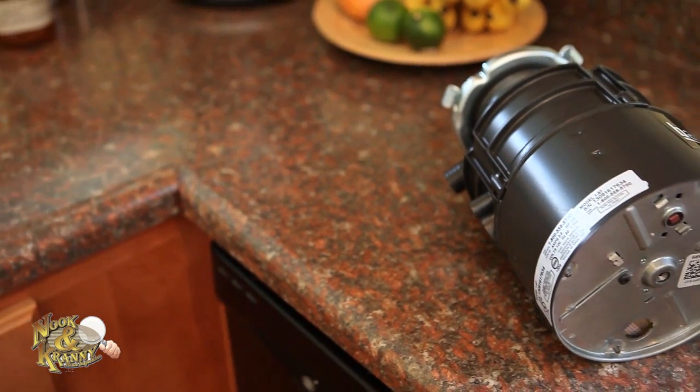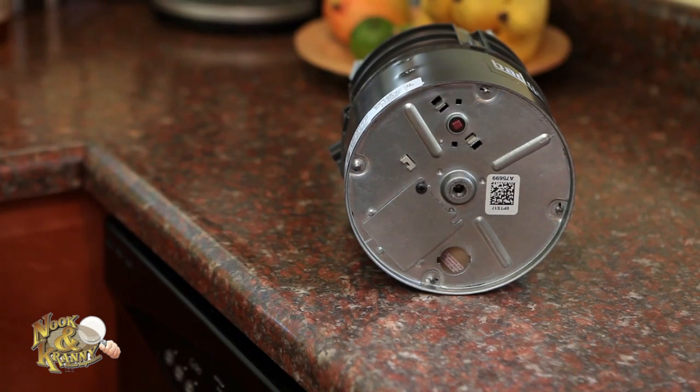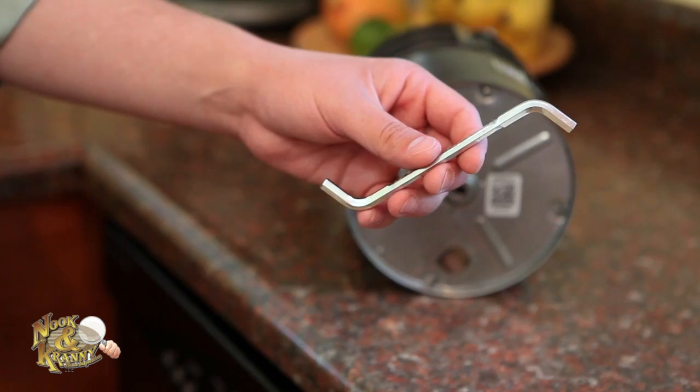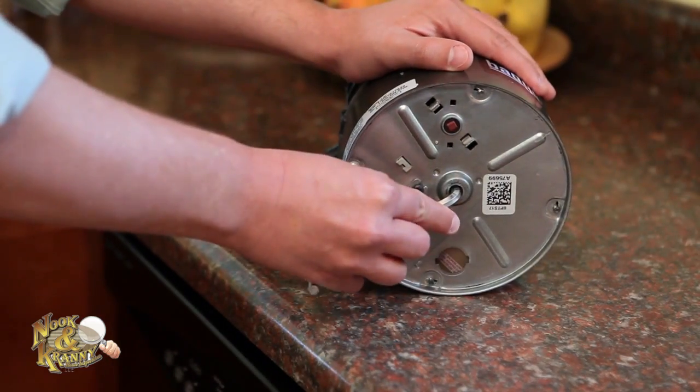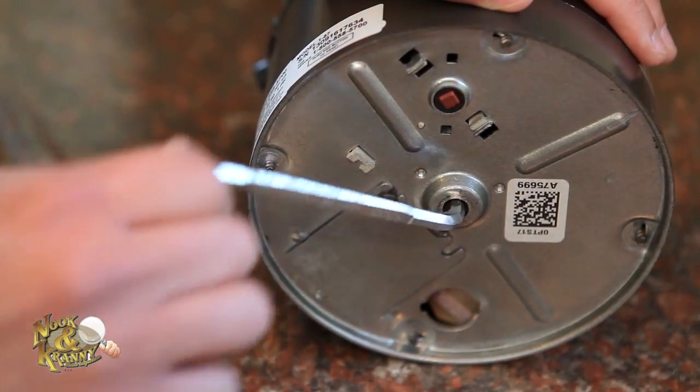With the unit still installed under the sink, look at the bottom of the disposal. You will see a hole in the center as well as a red reset button. Insert a garbage disposal key or Allen wrench into the hole and turn the key back and forth. This should loosen any blockage and free up the motor.